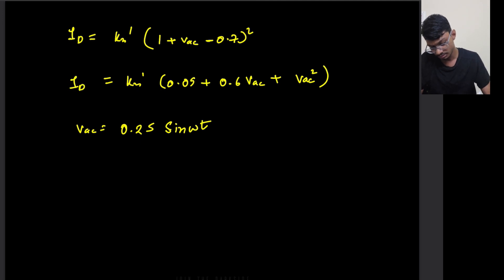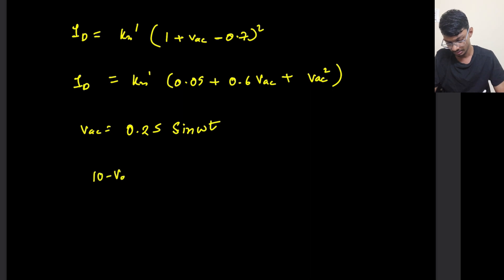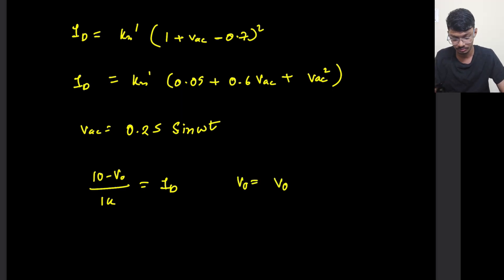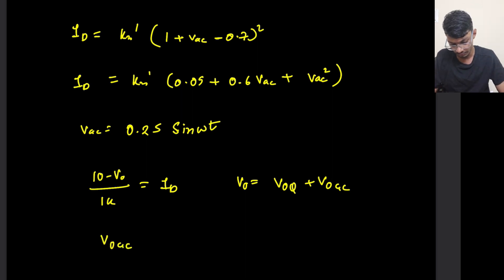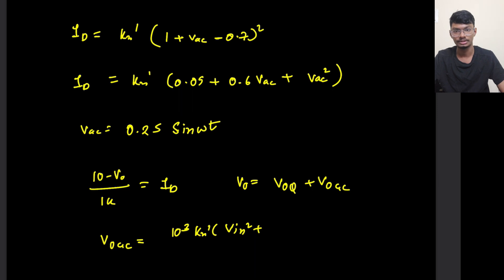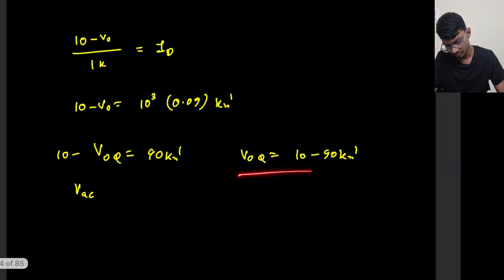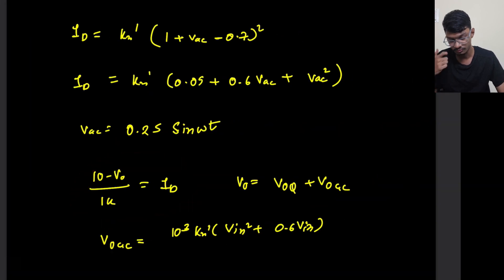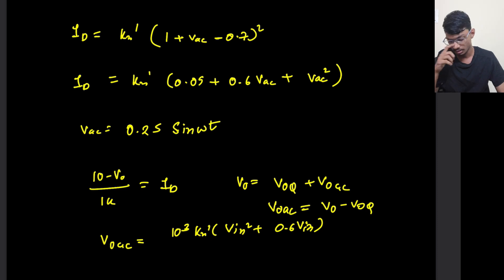The output voltage V_O = V_O_Q + V_O_ac. Using the KVL equation again: (10 − V_O) / 1kΩ = I_D. Subtracting the quiescent equation, we find V_O_ac = −10³ · Kn' · (0.6·V_ac + V_ac²). This separates the AC output component from the DC bias.